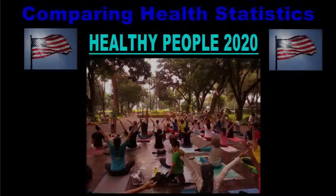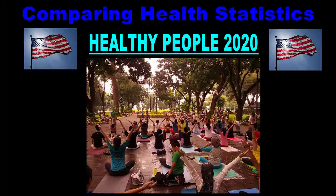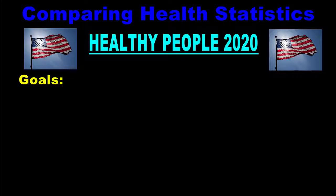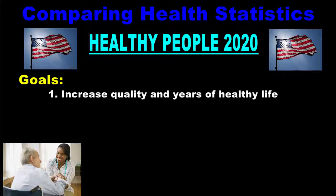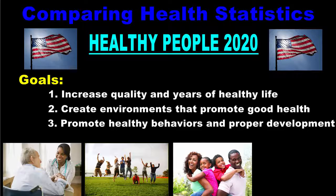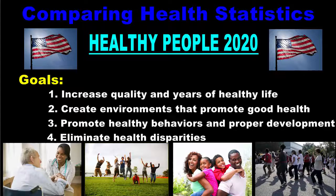Healthy People 2020 is a plan introduced by the federal government to promote healthy communities in the United States. The plan identifies 12 leading health indicators that can be used to measure the relative healthiness of various communities within the country. The goals of Healthy People 2020 are to increase the quality of life and the life expectancy of Americans, to create environments that promote good health, to encourage healthy behaviors in all life stages, and finally to eliminate health disparities amongst the communities that make up the nation.